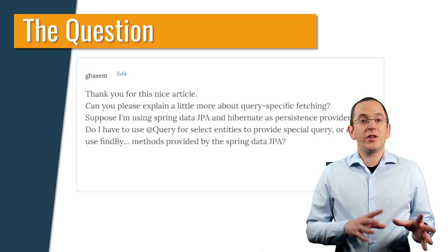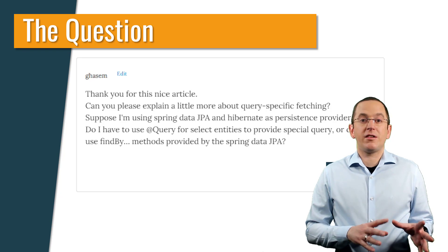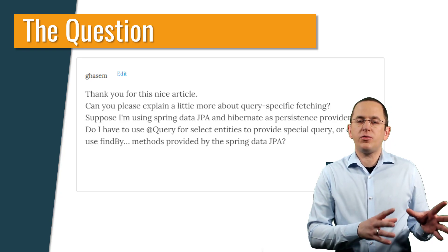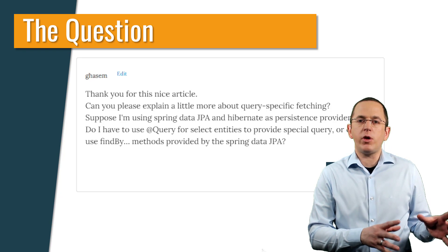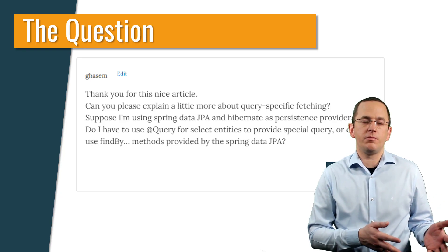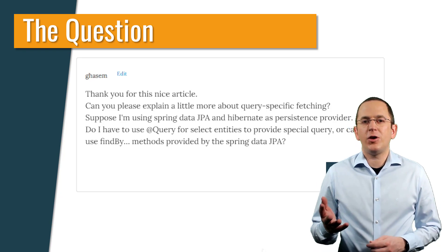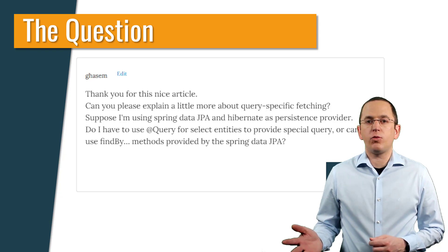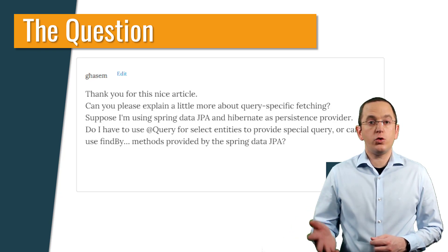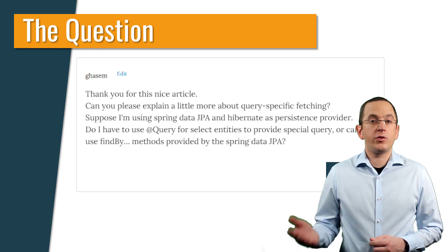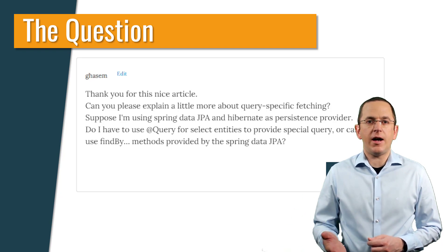Defining your query using Spring Data's @Query annotation is one option. It allows you to define a custom query, provides great flexibility, and is easy to use. But it's not your only option. You can also add a named entity graph reference to your query method, or implement a custom repository method that uses JPA's entity graph API.